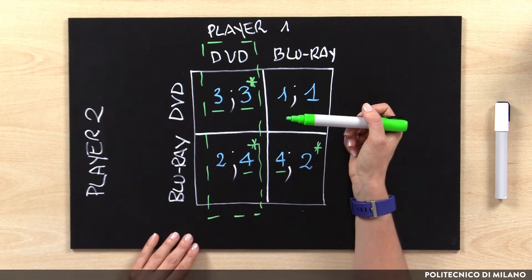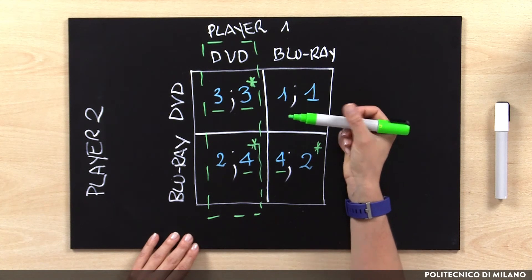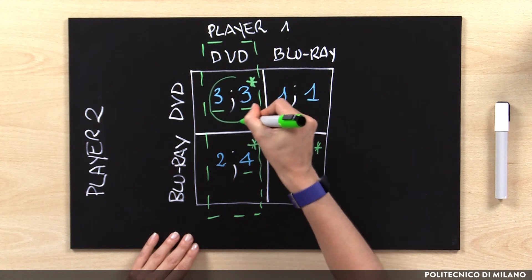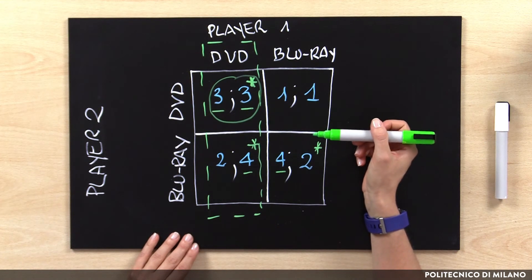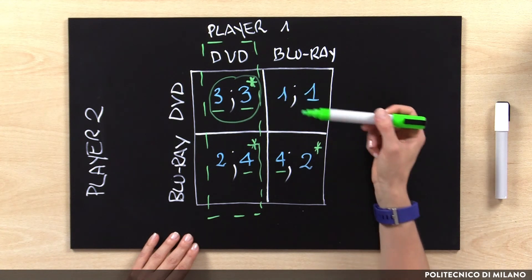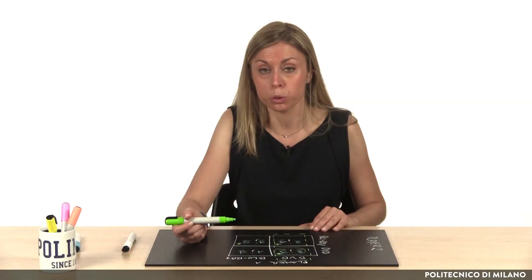We know that DVD is a dominant option for Player 1, and so we could take for granted that Player 1 is going to select that option. In case of a dominant option, the equilibrium point is the best option of the other player. In this case, the equilibrium point is by chance also an efficient solution — a positive result, because individual optimal solution and system optimal solution coincide, but this is not always guaranteed.